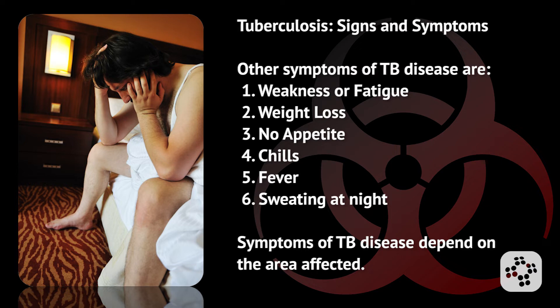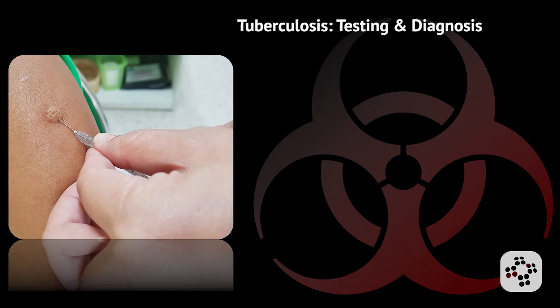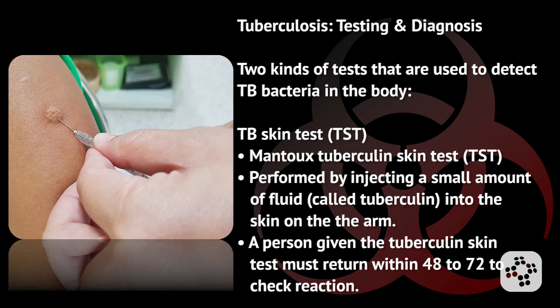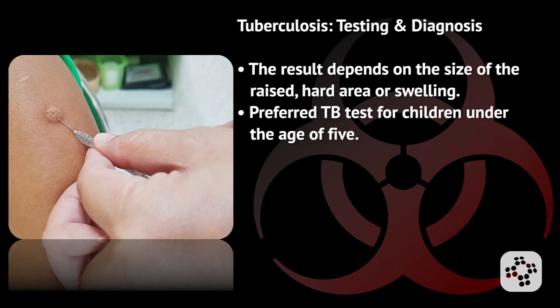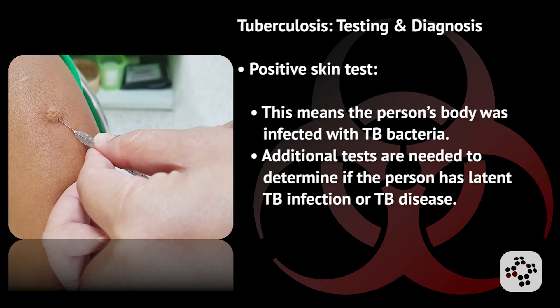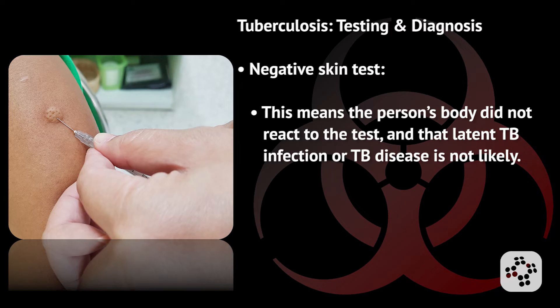Symptoms of TB disease in other parts of the body depend on the area infected. There are two kinds of tests used to detect TB bacteria in the body. A TB skin test — also called the Mantoux tuberculin skin test, or TST — is performed by injecting a small amount of fluid called tuberculin into the skin on the arm. A person given the tuberculin skin test must return within 48 to 72 hours to have a trained healthcare worker look for a reaction. The result depends on the size of the raised, hard area of swelling. This is the preferred TB test for children under age five. A positive skin test means the person's body was infected with TB bacteria; additional tests are needed to determine if the person has latent TB infection or TB disease. A negative skin test means latent TB infection or TB disease is not likely.